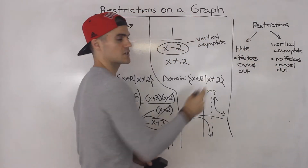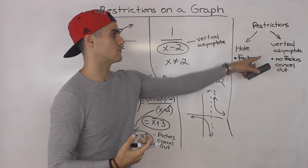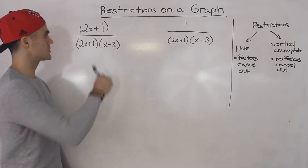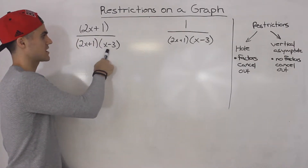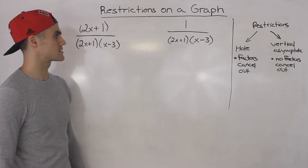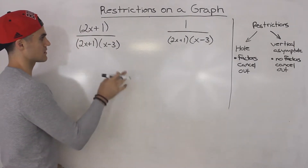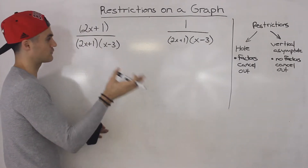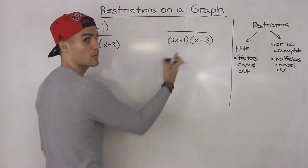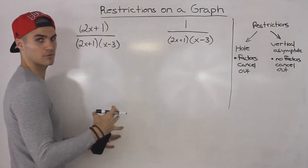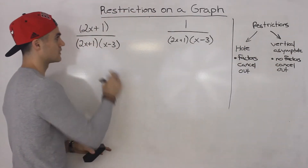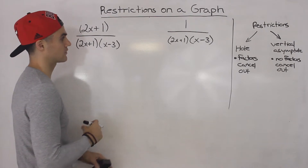So a restriction is always going to be one of those two things. Let's compare two more rational expressions before finishing off this video. We got 2x plus 1 over (2x plus 1)(x minus 3), and then 1 over (2x plus 1)(x minus 3). Sometimes these will be given in expanded form, so you have to factor it first. Just to save time, I already factored the denominator. If you're trying to figure out whether the restriction is a hole or a vertical asymptote, you always have to factor first.